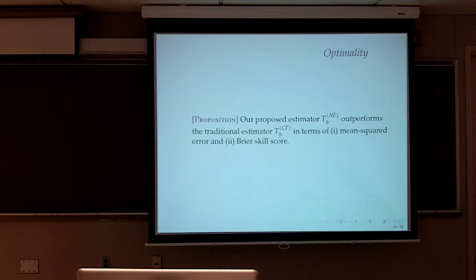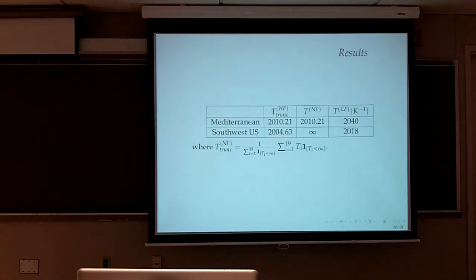The estimator, the new forecast, using the average times, the average of the times, the time of the average crossing the boundary, outperforms the traditional estimator in terms of mean square error and Brier score. Under the conditions that I stated, this can be proved. I can show it to you later on.